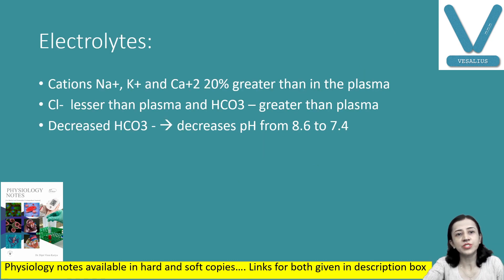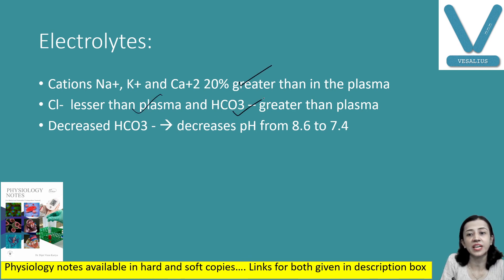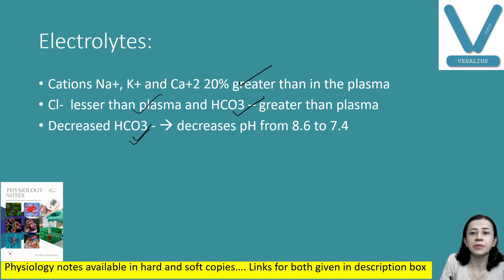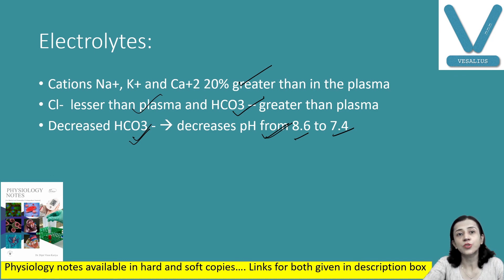Electrolyte composition: bile contains sodium, potassium, calcium (20% greater than plasma), chloride ions (less than plasma), and bicarbonate ions (greater than plasma). When bicarbonate ion decreases, pH decreases from 8.6 to 7.4. This is all about composition, various constituents of bile, and their functions.